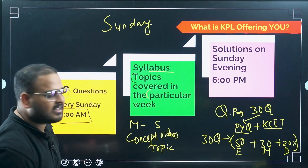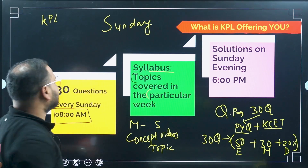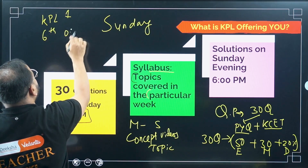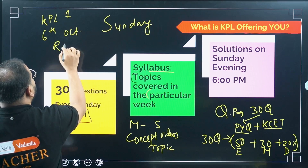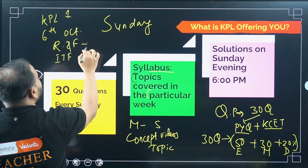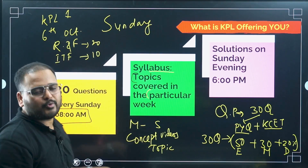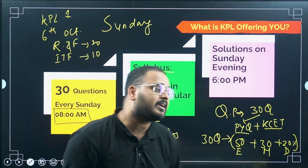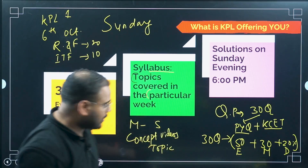For example, taking KPL 1 — KCET Premier League for Mathematics 1, which is coming on 6th October — in this we are going to cover Relations and Functions along with some ITF. You can expect around 20 questions from Relations and Functions and around 10 questions from ITF. One or two questions can be here and there, but that is your syllabus for the first KPL on 6th October.